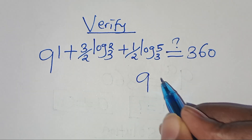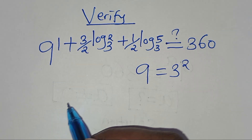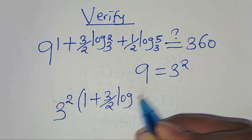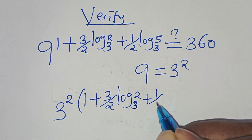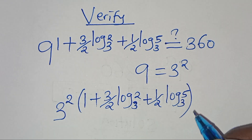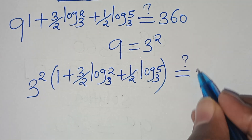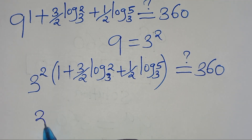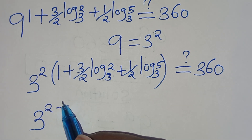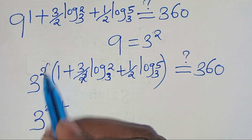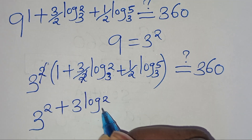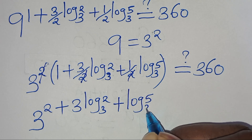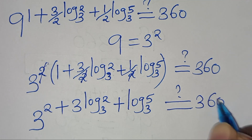Now from here, we can express 9 as 3 to the power of 2, so let's substitute this. So we have 3 to the power of 2 times the quantity 1 plus 3 over 2 times log base 3 of 2, plus one half times log base 3 of 5. This should give us a value of 360. Let's open the parentheses: we have 3 to the power of 2, then plus 2 times 3 over 2 simplifies to 3·log base 3 of 2, then plus 2 times one half simplifies to log base 3 of 5.